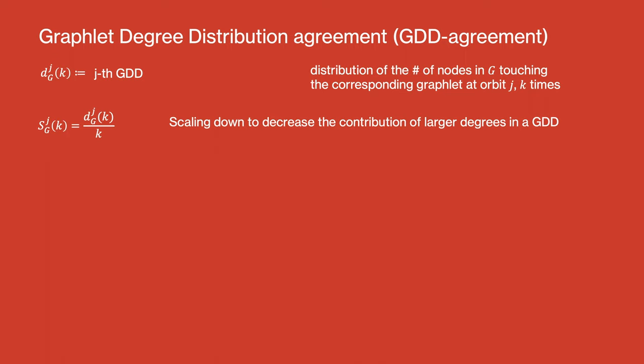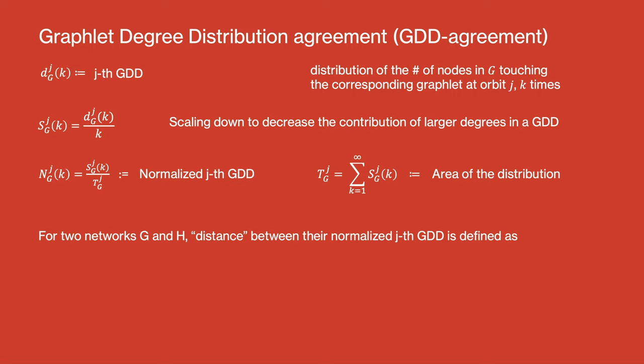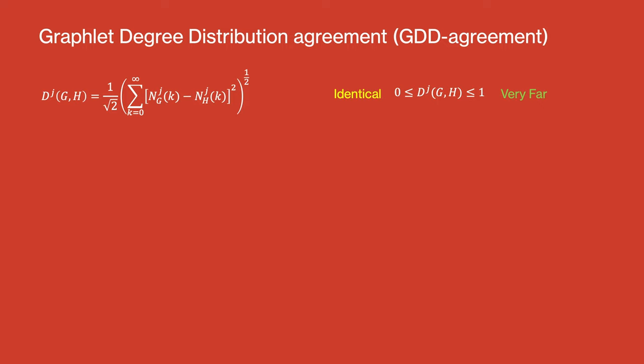This value is scaled down to decrease the contribution of larger degrees in a GDD. It's then normalized by dividing by the area of the distribution. Now, for two networks G and H, a distance between their normalized GDD is defined. In this formula, the d_j or the distance is always from 0 to 1. If it's 0 then the two networks are identical, and if it's 1 then they are very far from similarity.